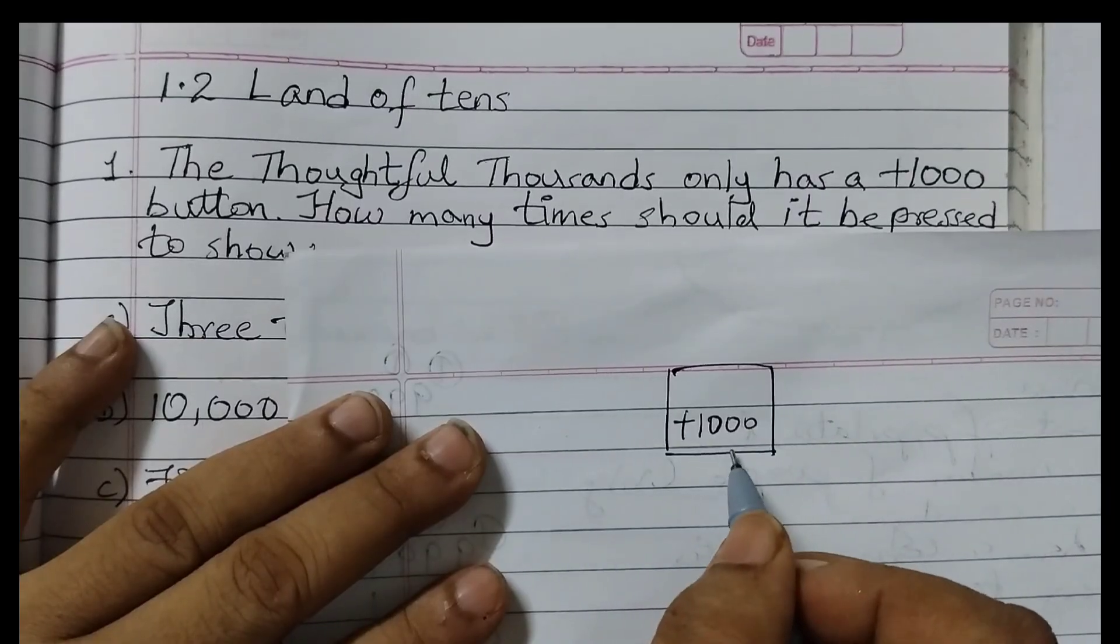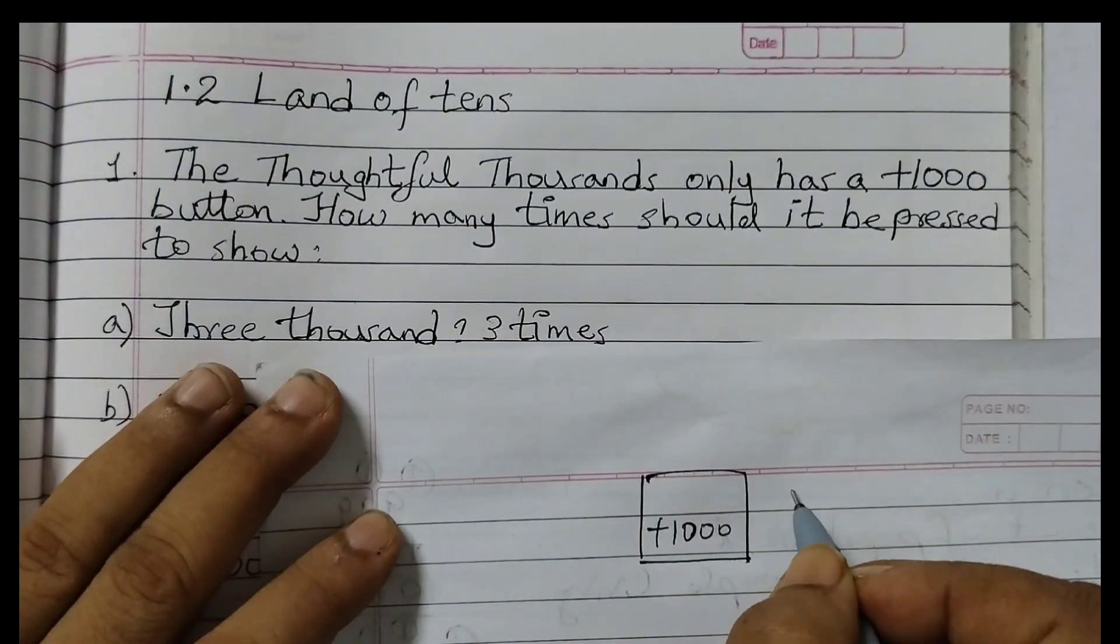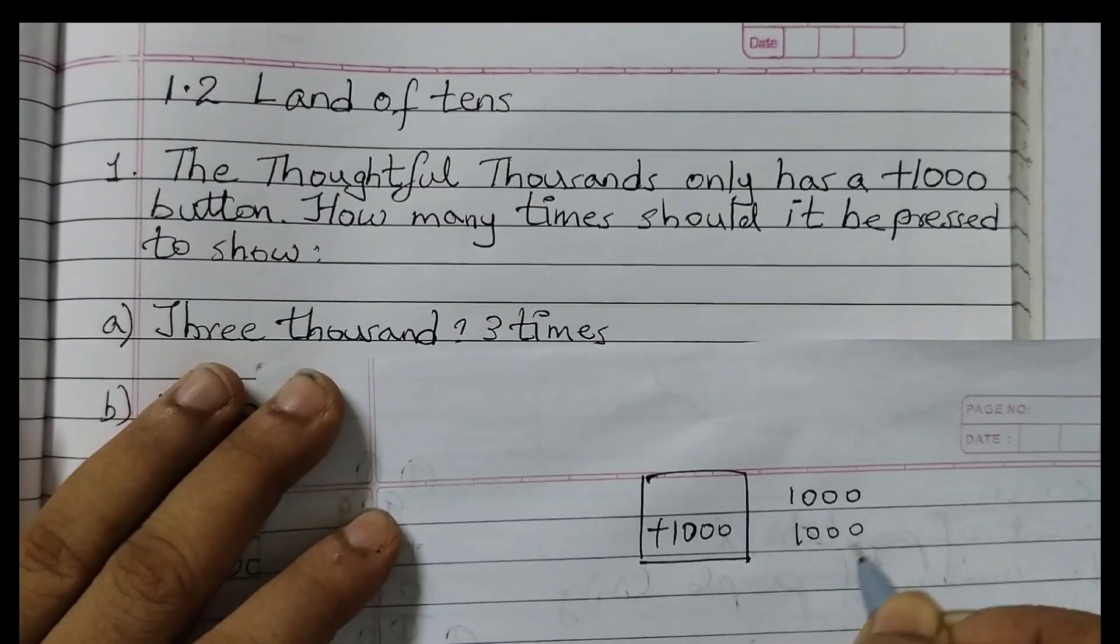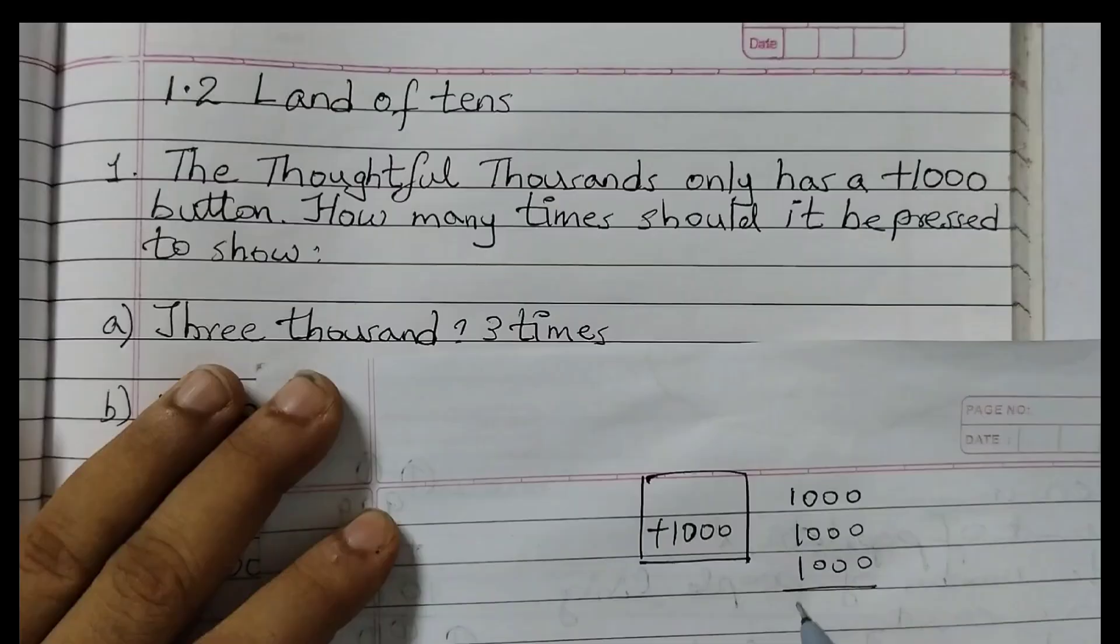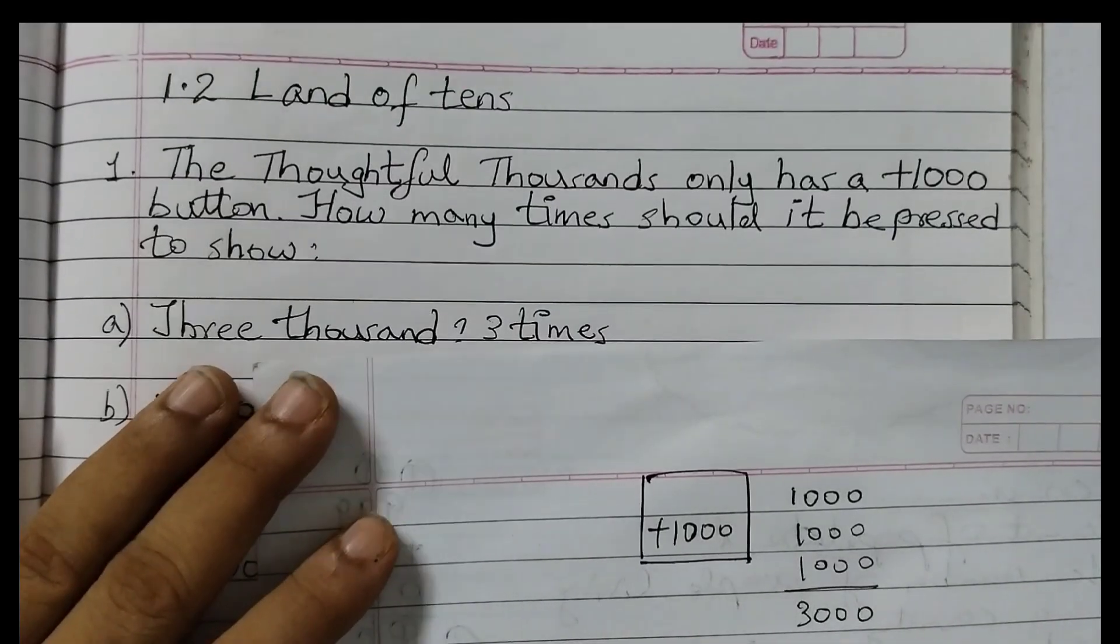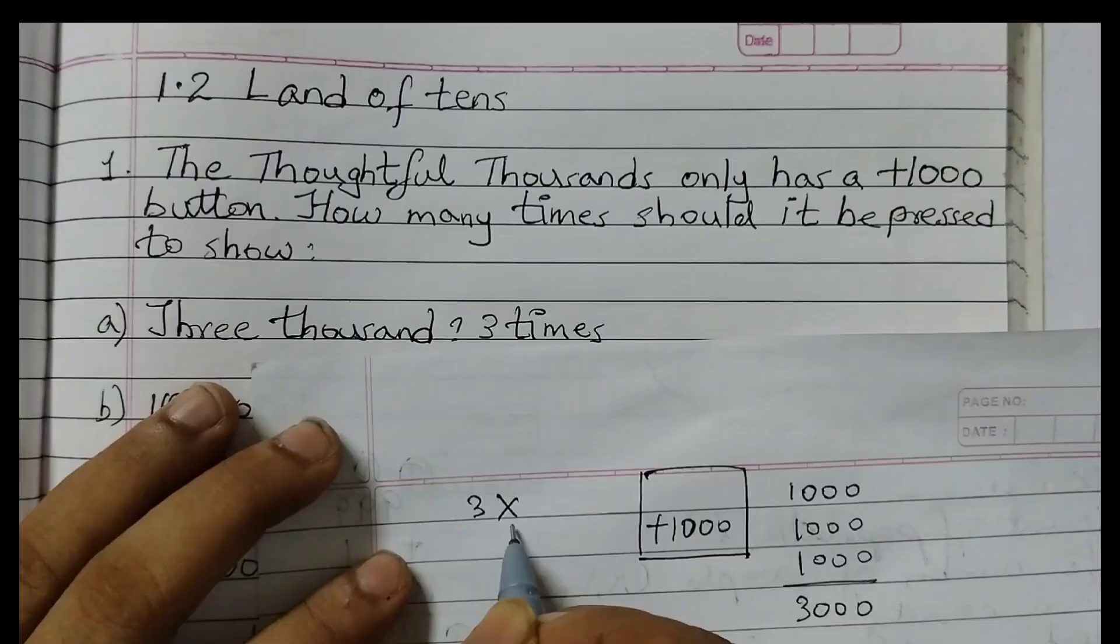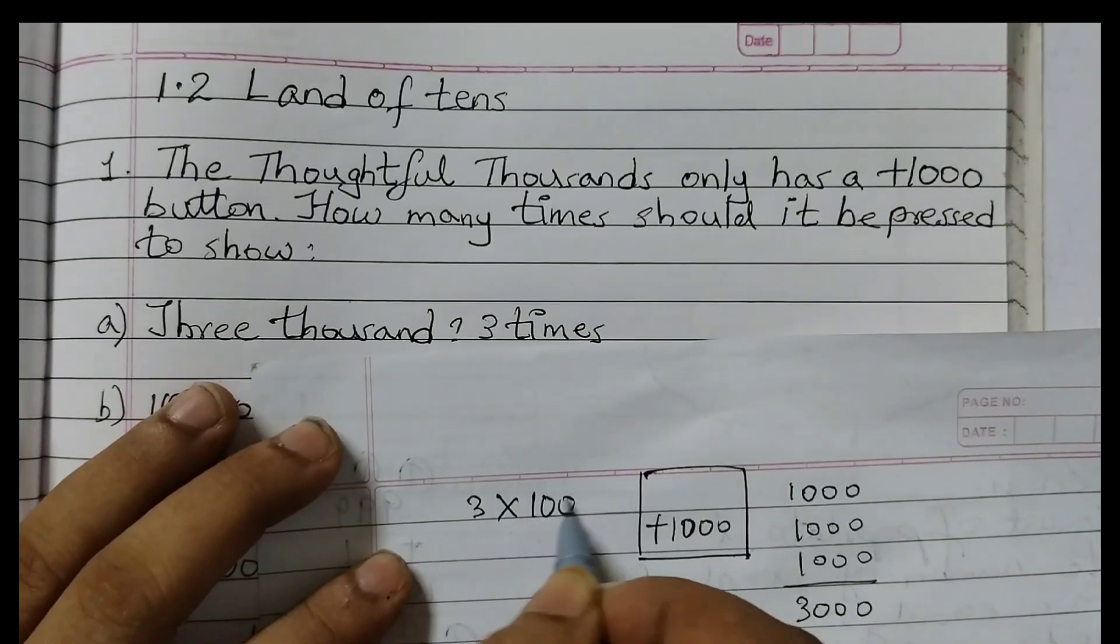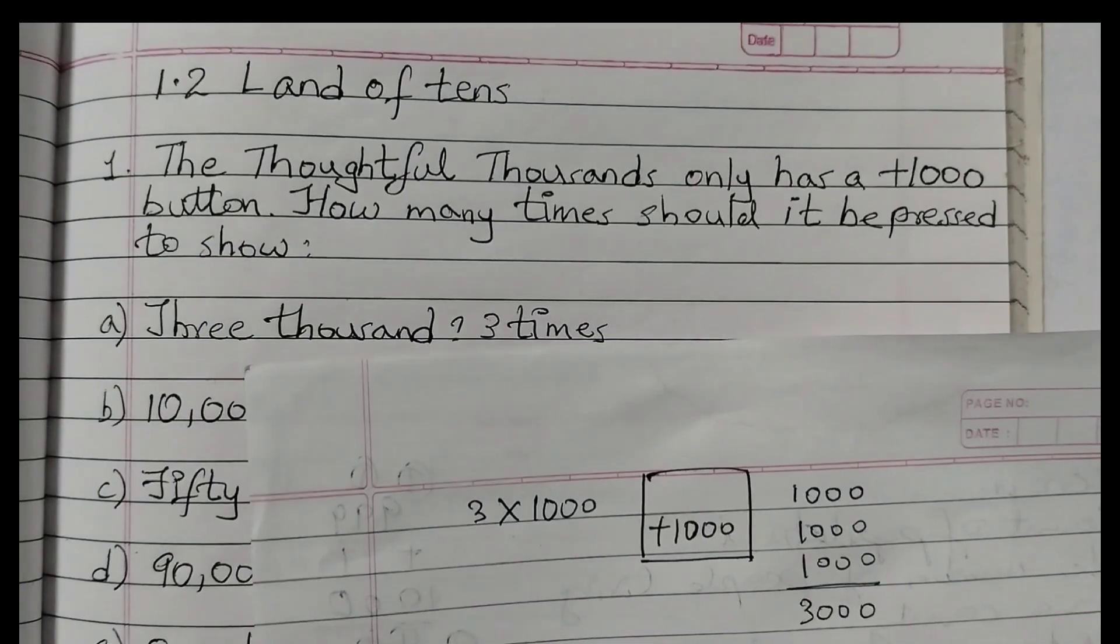Only button present is plus 1000. So anytime you press, 1000 would be added. So we have 3000, that means 1000, 1000, 1000. When we press it 3 times, we will get 3000. So we can say that 3 times - times means multiplication - 3 times 1000 is 3000, right? So the answer is 3 times.